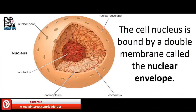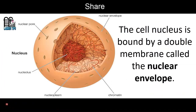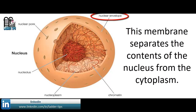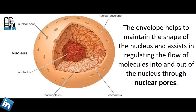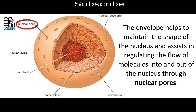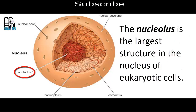The Cell Nucleus is bound by a double membrane called the nuclear envelope. This membrane separates the contents of the nucleus from the cytoplasm. The envelope helps to maintain the shape of the nucleus and assists in regulating the flow of molecules into and out of the nucleus through nuclear pores.